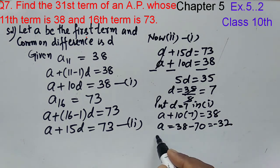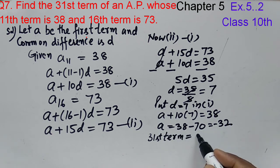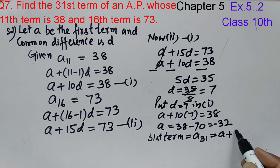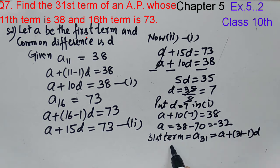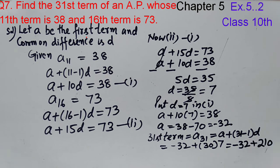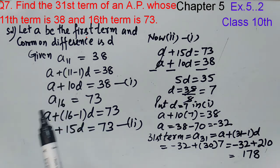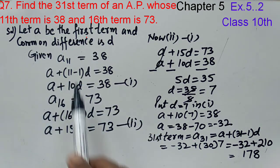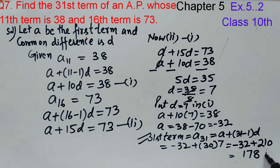We were asked to find the 31st term. Now A31 equals A plus (31 minus 1) into D. Substituting: A is minus 32 plus 30 into D, where D is 7. This gives minus 32 plus 210, which equals 178. So our question gave us the 11th and 16th terms, and we had to find the 31st term. The 31st term is 178. This is the answer.